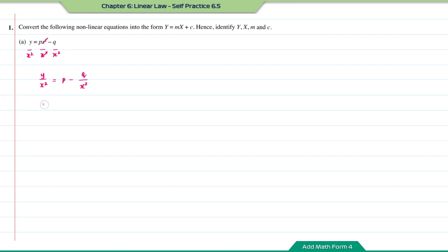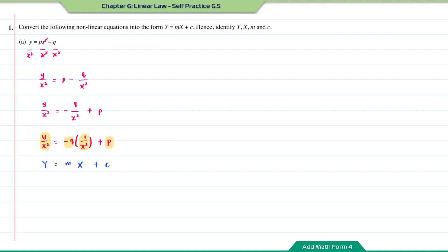I can rearrange this to make comparison easier. So I can write this as negative q over x squared plus p. And for this negative q over x squared, I can write it as negative q multiplied by 1 over x squared plus p. By comparing with y equals mx plus c: y over x squared is the y, negative q is the m, 1 over x squared is the x, and p is the c.